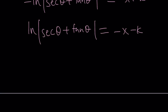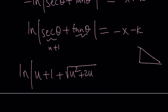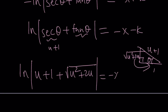Now let's back substitute. Secant theta is u plus 1. So we get the natural log of the absolute value of u plus 1, plus — drawing a right triangle with secant theta equal to u plus 1, the hypotenuse is u+1, the adjacent is 1, so by the Pythagorean theorem the opposite side is the square root of u squared plus 2u, meaning tangent theta equals the square root of u squared plus 2u. And this equals negative x minus k.